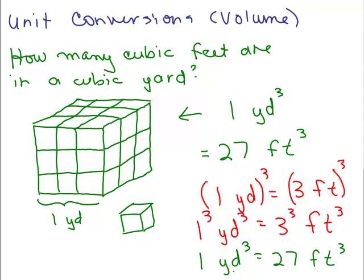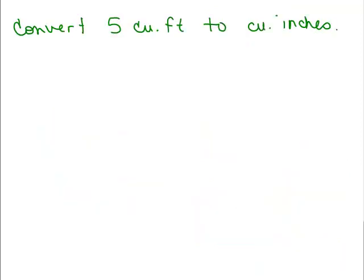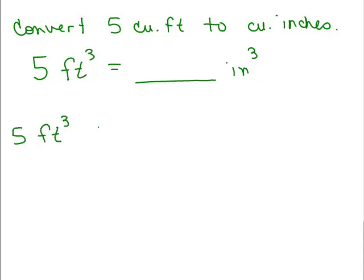Since a cubic yard is 27 cubic feet, remember that we're going to start with something in 3D — cubic feet, cubic inches, cubic yards, cubic meters, whatever — and convert it to something else that's also 3D. In other words, you can't go from cubic feet to just inches; you have to go from cubic feet to cubic inches, et cetera. So here's an example: convert five cubic feet to cubic inches. Basically, if you've got 5 cubic feet, how many cubic inches is that? That's what we're trying to find.